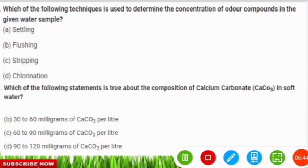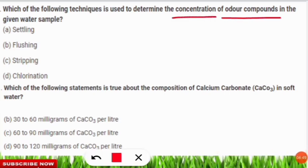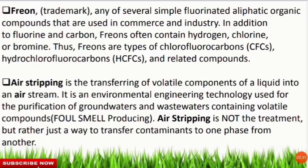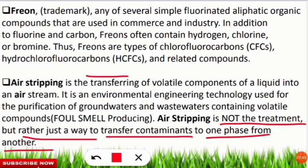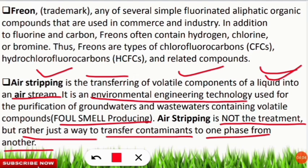The next question: which technique is used to determine the concentration of odor compounds in a given water sample? The correct option is C — air stripping. Air stripping is not a treatment process but rather a way to transfer contaminants from one phase to another. It transfers volatile organic compounds from liquid (water) into an air stream. It is an environmental engineering technology used for purification of groundwater and wastewater containing volatile compounds.